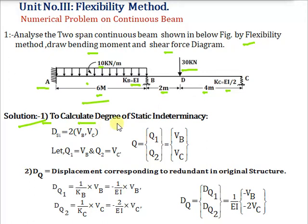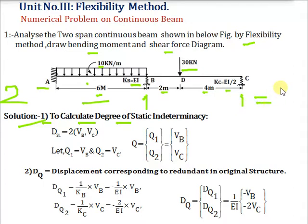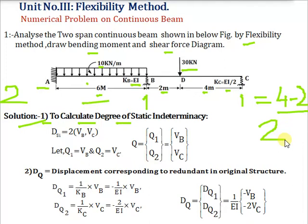First step is to calculate degree of static indeterminacy. At A there are 2 unknowns (neglecting horizontal reaction). At B there is 1 unknown spring force and at C again 1 unknown spring force. Total unknowns are 4, and we have 2 equilibrium equations (neglecting horizontal equilibrium, summation Fx = 0). So degree of static indeterminacy = 4 - 2 = 2.